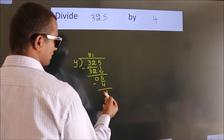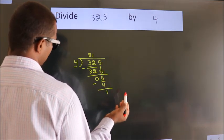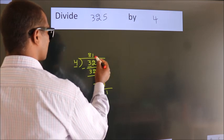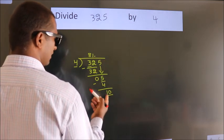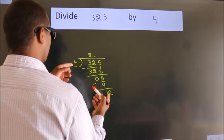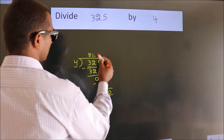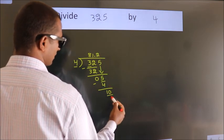After this, no more numbers to bring down. So what we do is, we put a dot and take 0. So, 10. A number close to 10 in the 4 table is 4 times 2 equals 8.